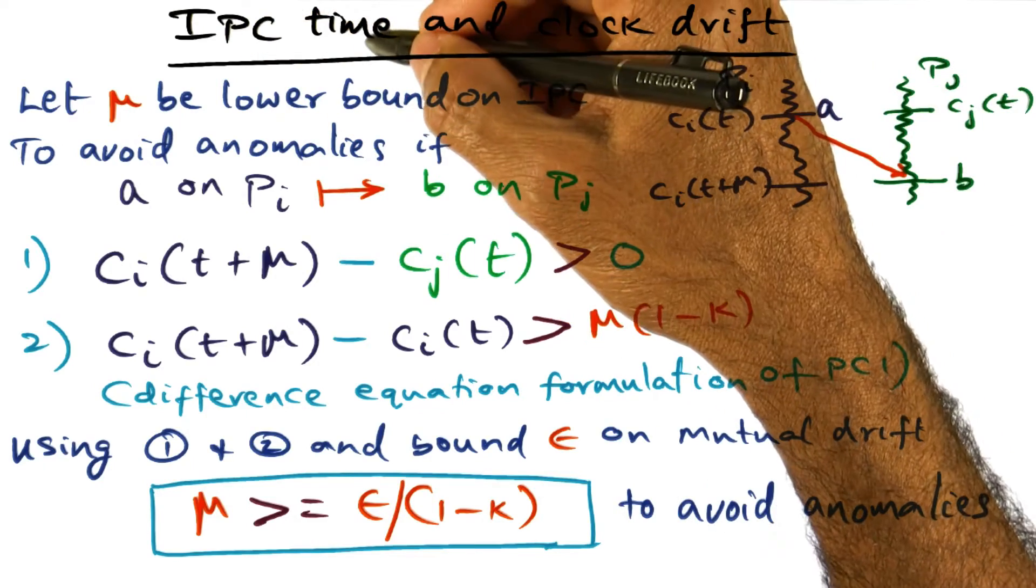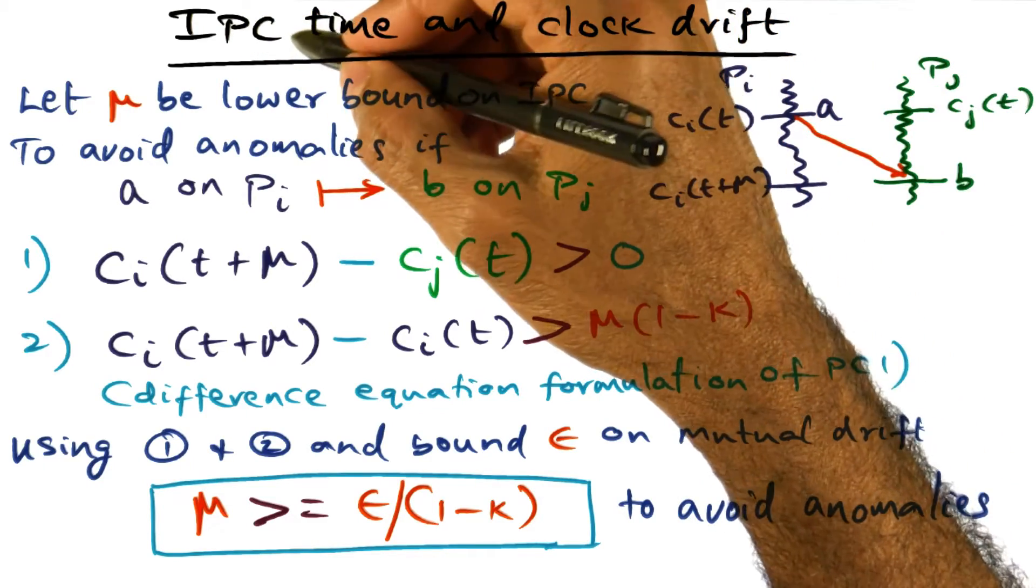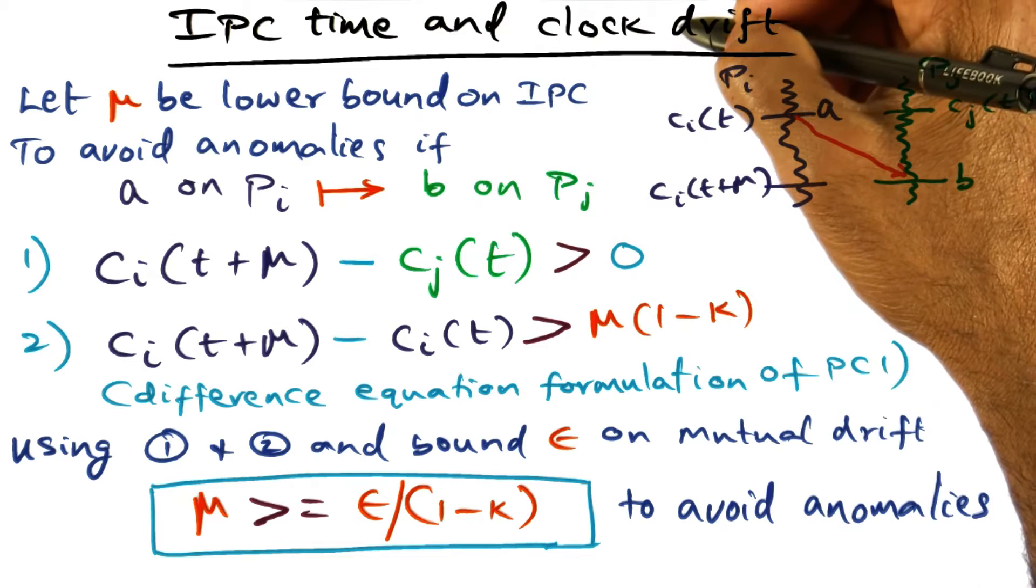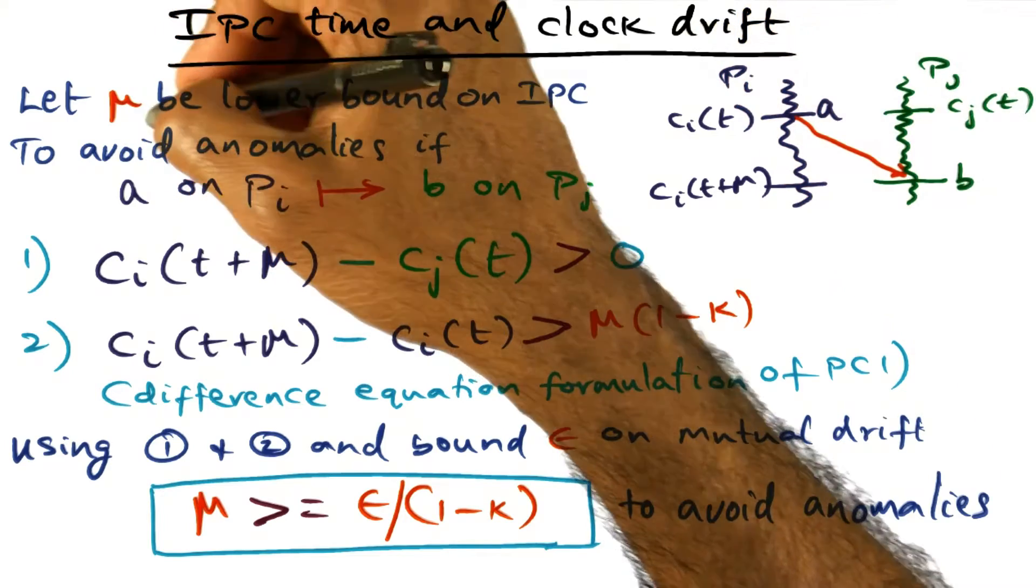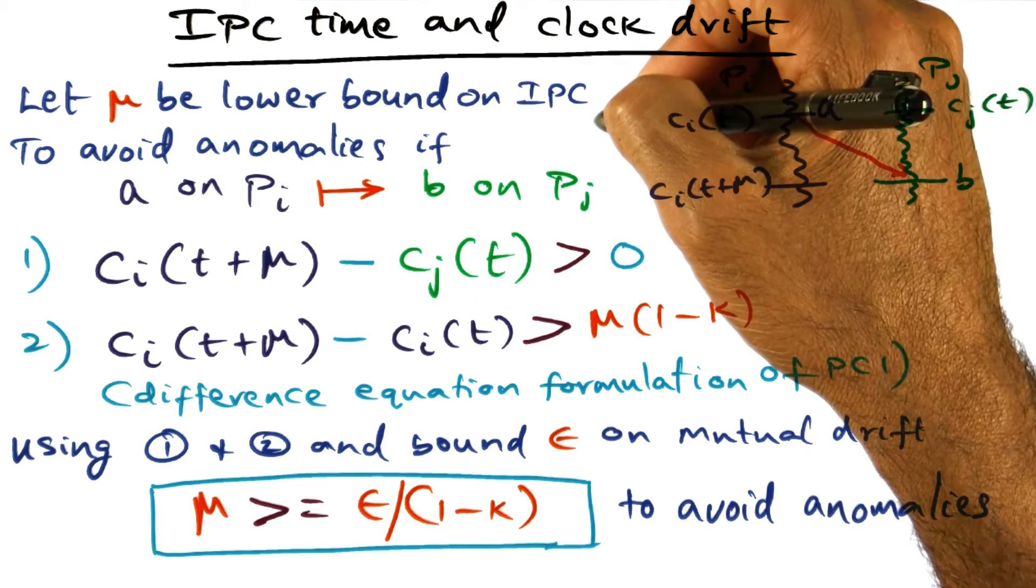So what we're going to look at now is the relationship between the inter-process communication time and both the individual and the mutual clock drift that I described to you. Let mu be the lower bound on the inter-process communication time.